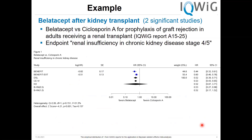Here is one example from an IQWIG report. We have two significant studies. In IQWIG language, if we have two significant studies on the right side, then this is a proof of added benefit. If we apply the former standard, the DerSimonian and Laird method, we get this result. Here is also a result of the fixed effect model, but here we have an I-squared of over 50%, and if the design of these two studies is not the same, the assumption of the fixed effect model is questionable.